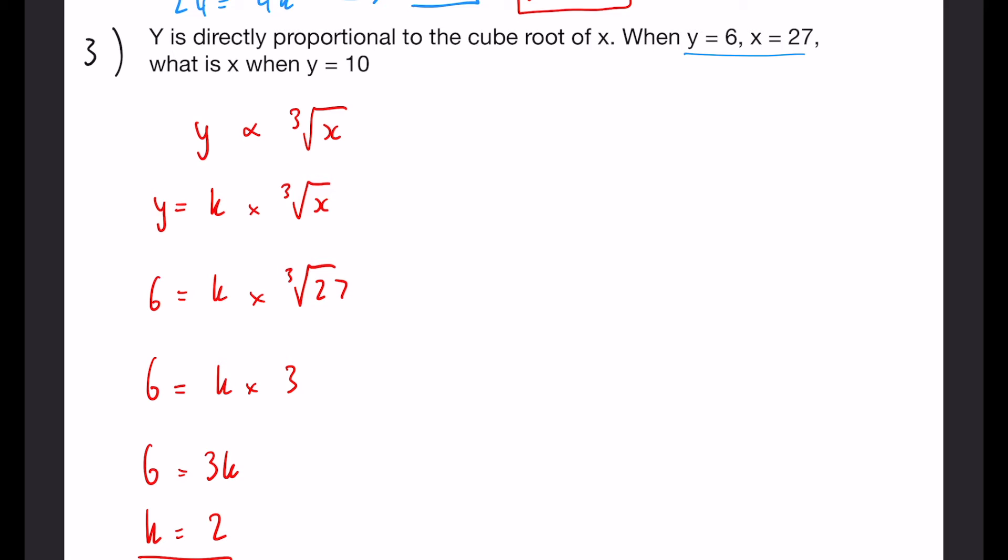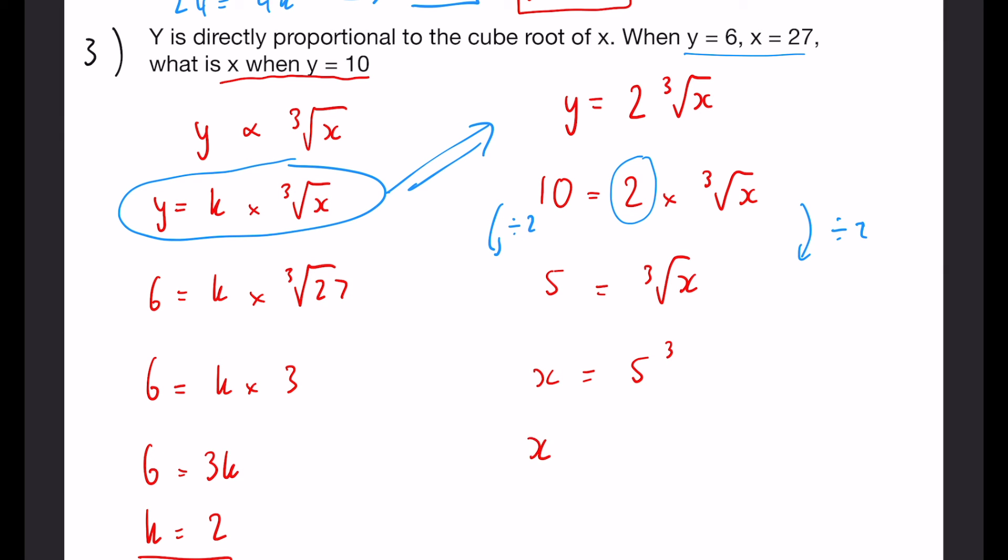So again once we know what k is we take our original equation here and we can rewrite it up here. So y equals 2 multiplied by the cube root of x and we need to work out x when y equals 10 this time. So 10 equals 2 multiplied by the cube root of x. So this time we have to do a little bit of rearranging. If we're multiplying by 2 here we want to divide by 2 on both sides. So 10 divided by 2 gives us 5 and that's going to leave us with the cube root of x and we want to work out what x equals so we have to cube both sides. So basically just 5 cubed so x is 125.